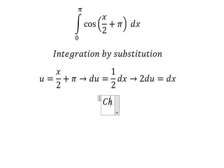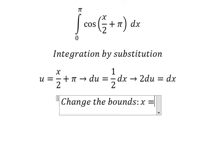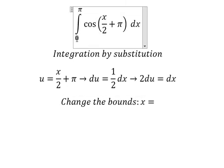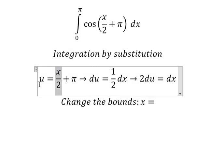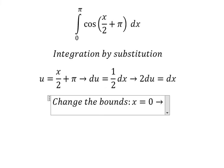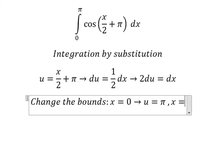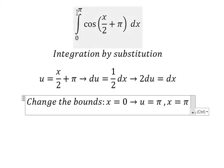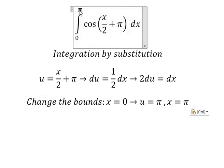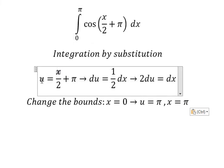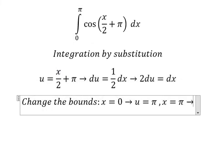Next we need to change the bounds. When x equals zero, I will substitute zero here to find the value of u, so u equals π. When x equals π, I will put the value of π here to find the value of u.